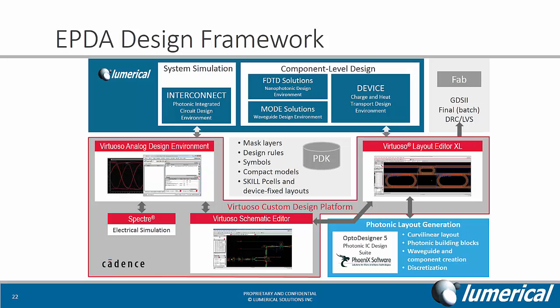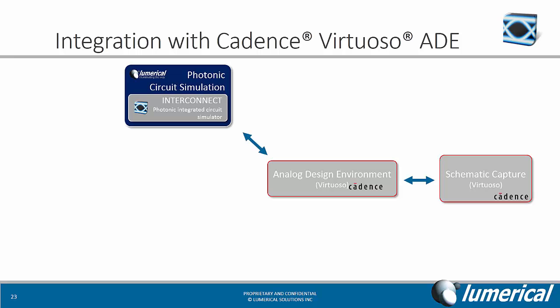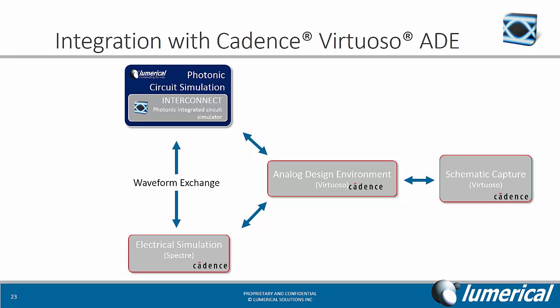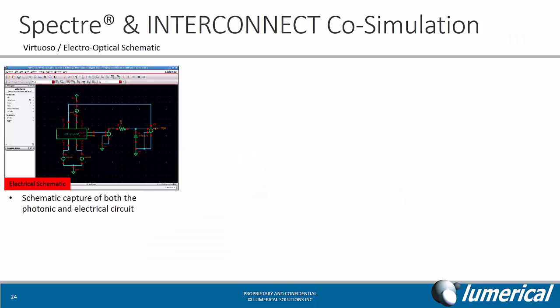Phoenix Software's advanced layout generation algorithm capabilities were also introduced to address photonic layout challenges. The co-design interface included a sequential simulation of the photonic and electrical circuit through a waveform exchange driven from the analog design environment. The new interface now supports a true co-simulation interface with Spectre and Interconnect communicating through Lumerical's new API and Verilog-DPI. The co-simulation capability is necessary for design with electro-optic feedback loops, for example in the case of an electro-optic oscillator.